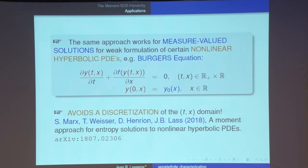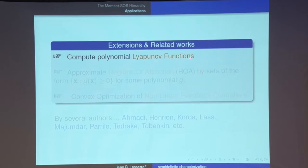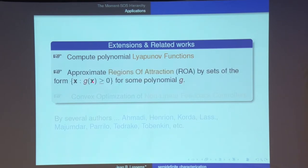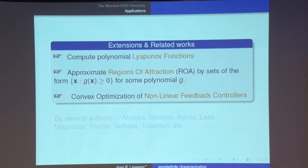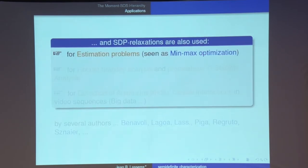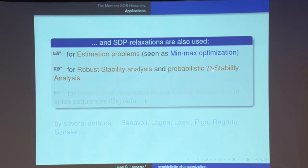The same occupation measure approach works for measure-valued solutions and weak formulations of certain nonlinear hyperbolic PDEs, like Burgers' equation. The weak formulation is an infinite-dimensional LP on the space of measures, just as for the optimal control problem. Applying the GMP machinery avoids discretization of the time-space domain. Very recent work shows very good results for the Burgers equation. Extensions include computing Lyapunov functions of polynomial degree 4, 5, 6 (usually only quadratic Lyapunov functions are used), approximating regions of attraction by sub-level sets of polynomials, and convex optimization of nonlinear feedback controllers.